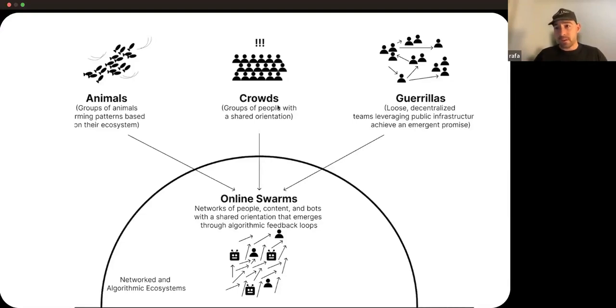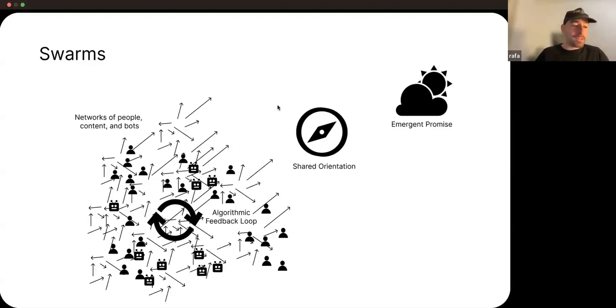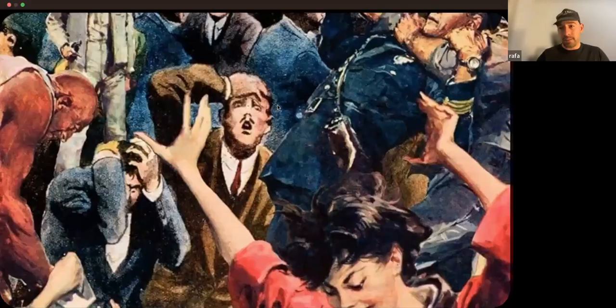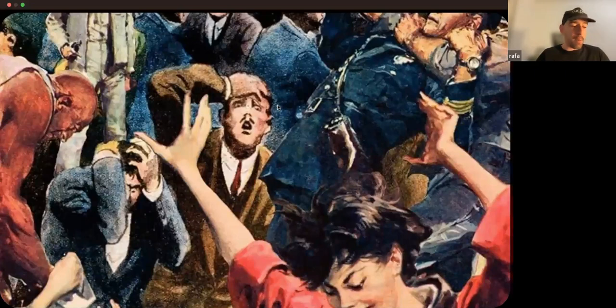Swarms at the end of the day inherit properties from animals, crowds, and guerrillas, but it's what happens when we are interconnected inside a networked and algorithmic ecosystem. Altogether, swarms are networks of people, content, and bots that have a shared orientation that is strengthened by their ecosystem's algorithmic feedback loops towards a promise. You have a diverse set of participants and at the same time those individuals have individual agency. They do not adhere to a collective we. They're constrained by their host platforms instead of the internal protocols because they do not have explicit internal protocols, and they're ubiquitously digital.